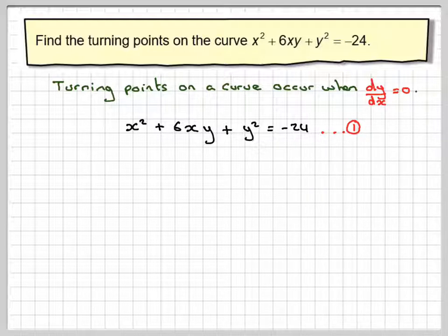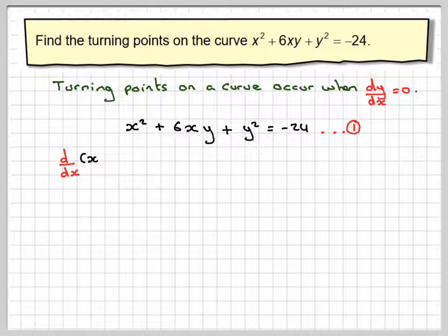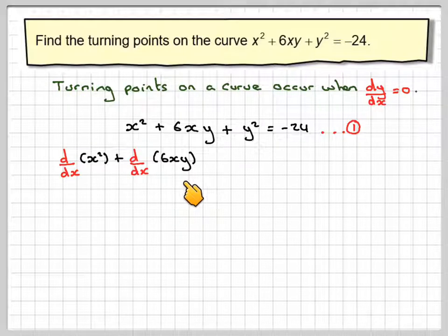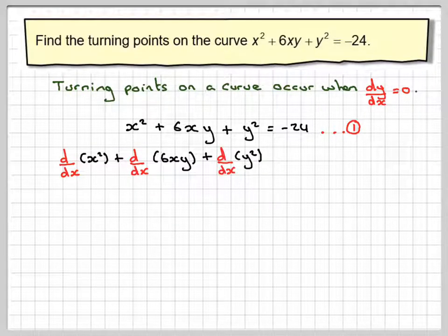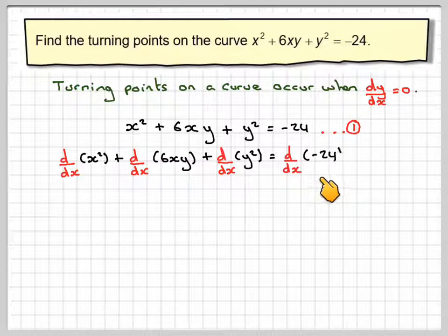We're going to call that equation 1 to begin with. Differentiating implicitly, we're going to have d dx of x squared plus d dx of 6xy plus d dx of y squared is equal to d dx of minus 24.